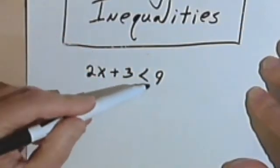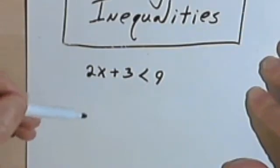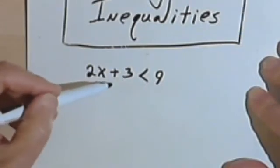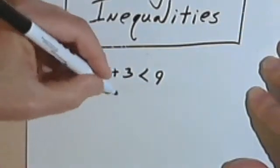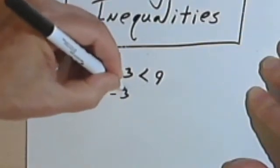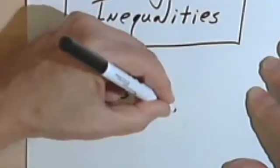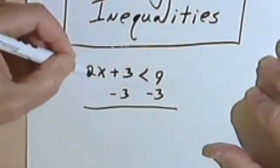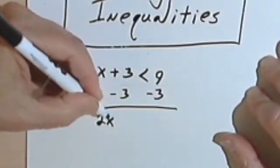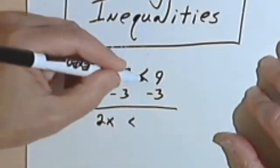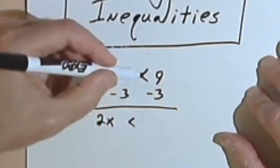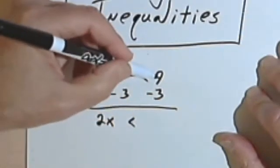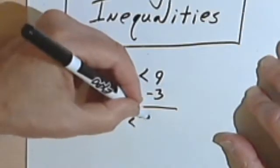If this was just a regular equation, the first thing I would do would be to subtract the 3 from both sides. So I'm going to do that. On the left side I'm just going to have 2x. I still have the inequality sign, 2x is less than, and then 9 minus 3 is 6.